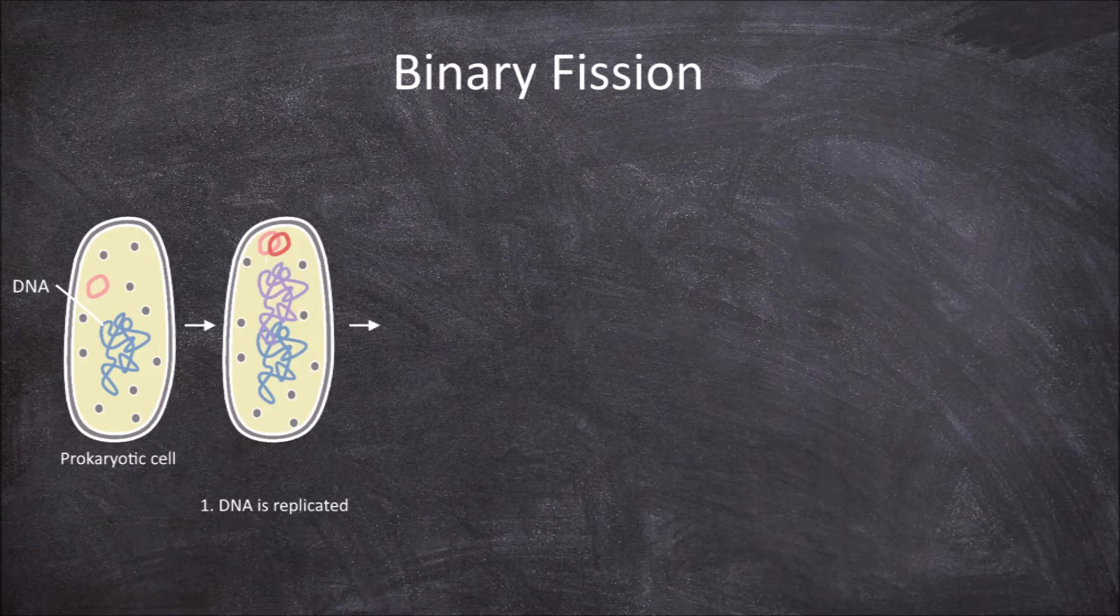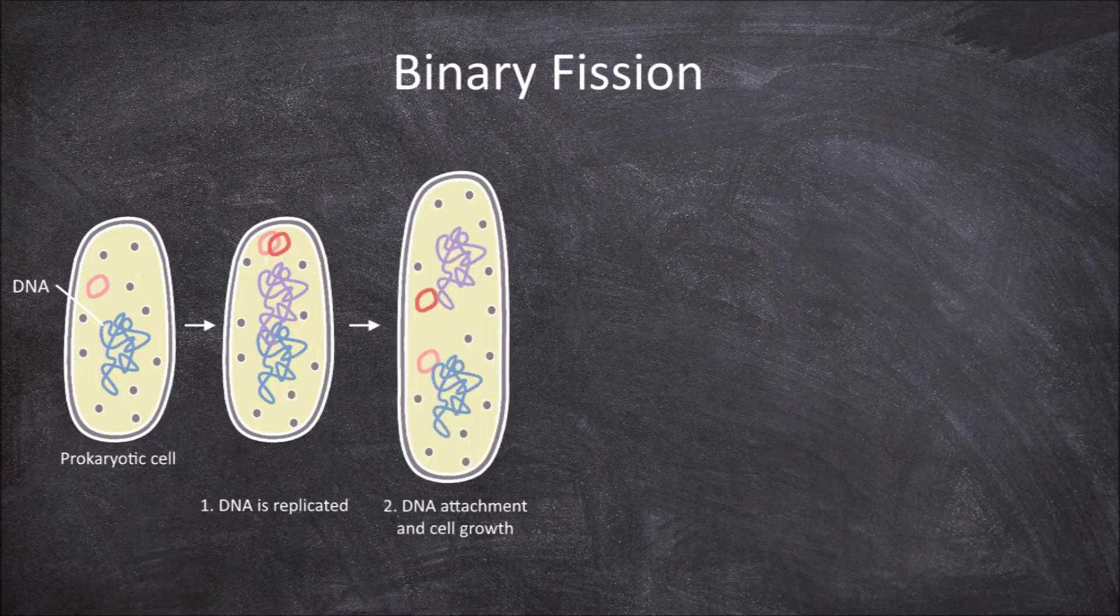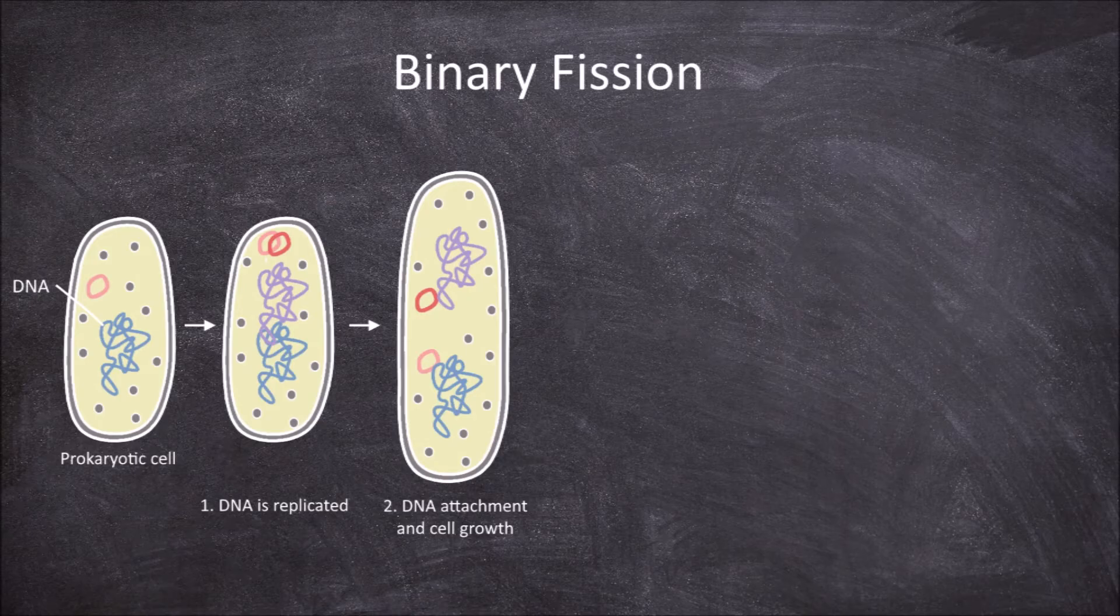The second step involves both DNA attachment and cell growth. The two circular DNA molecules attach to separate parts of the cell membrane.